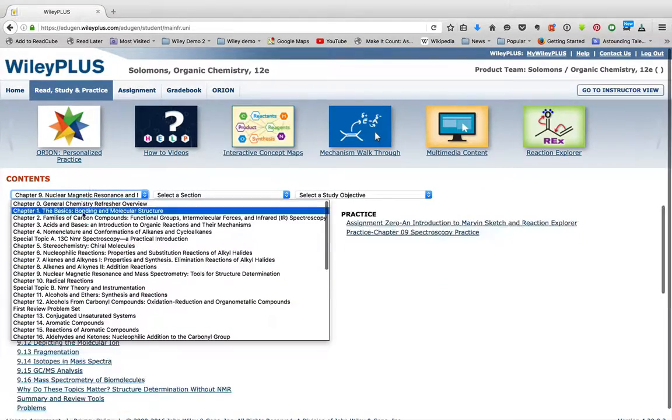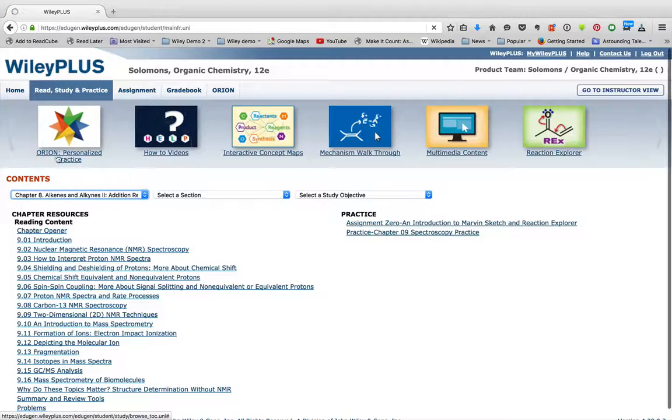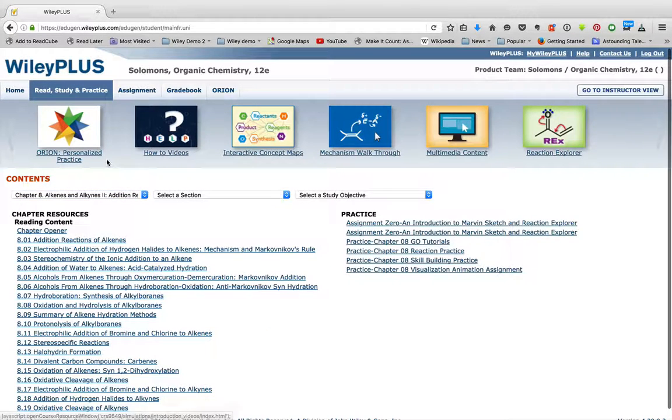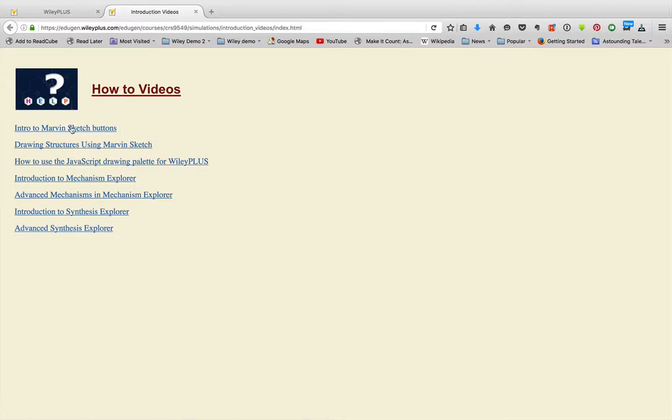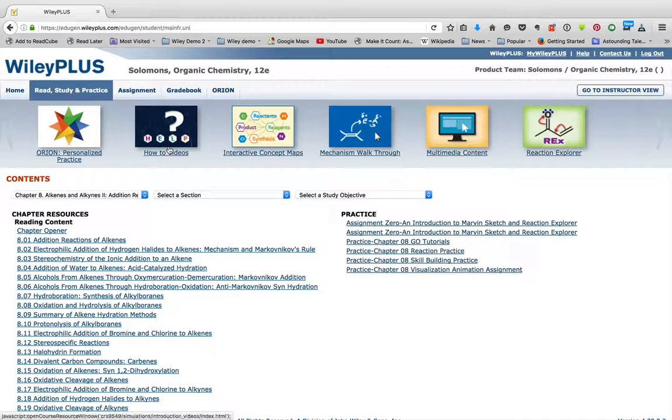Additionally, across the top, you're going to see these banner icons in this carousel. Orion will take you to Orion - we'll talk about that in another video. The how-to videos explain how to use the drawing program, Reaction Explorer, specifically Mechanism and Synthesis Explorer. If you have questions about how to use that drawing program, you can access those videos there.